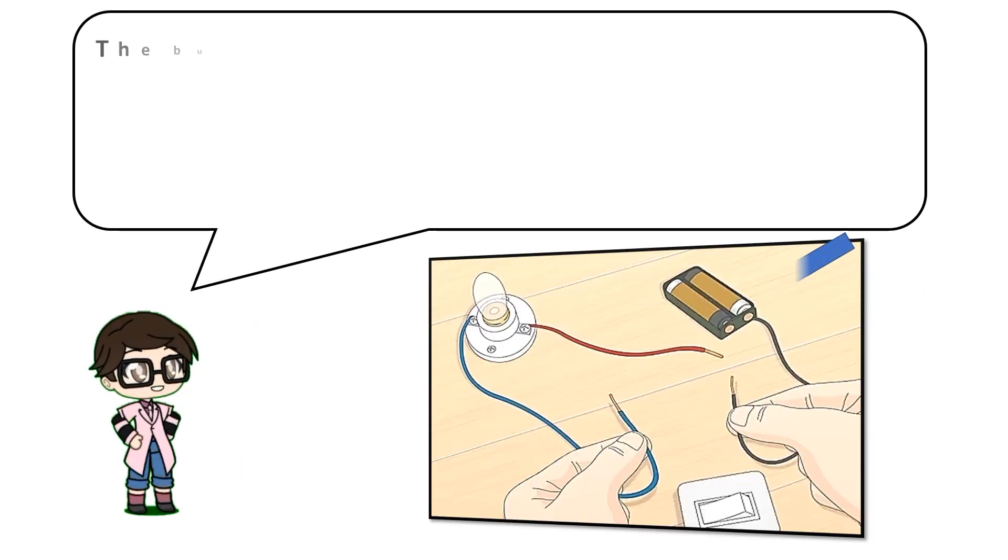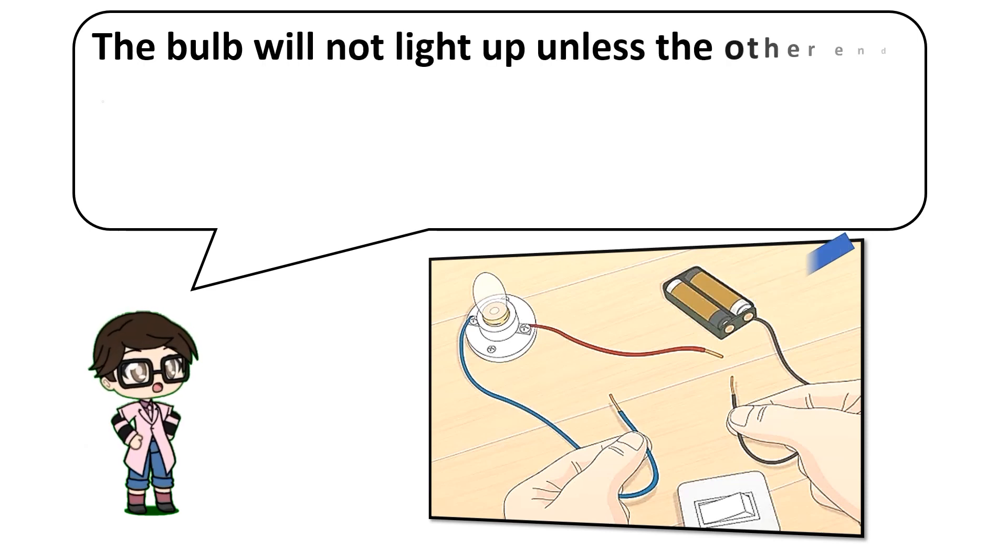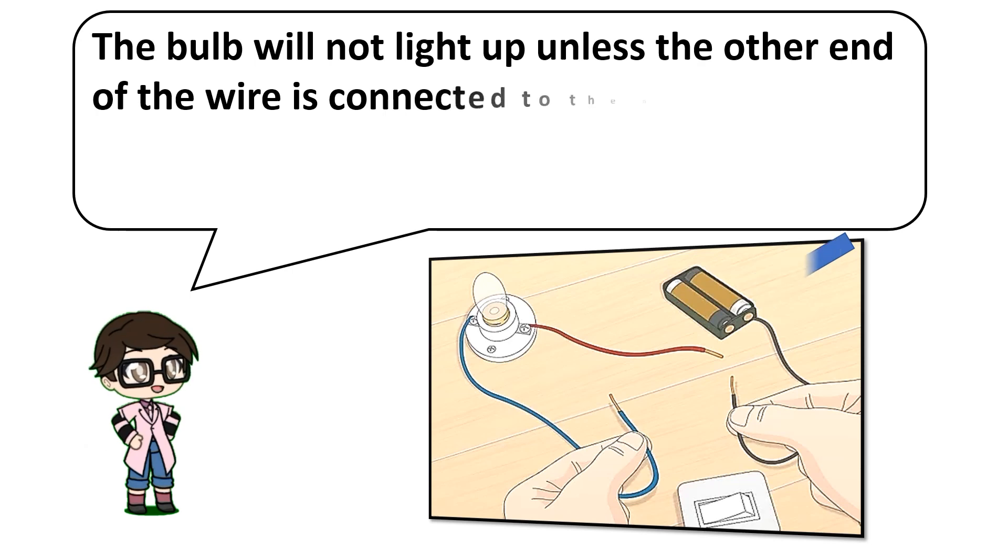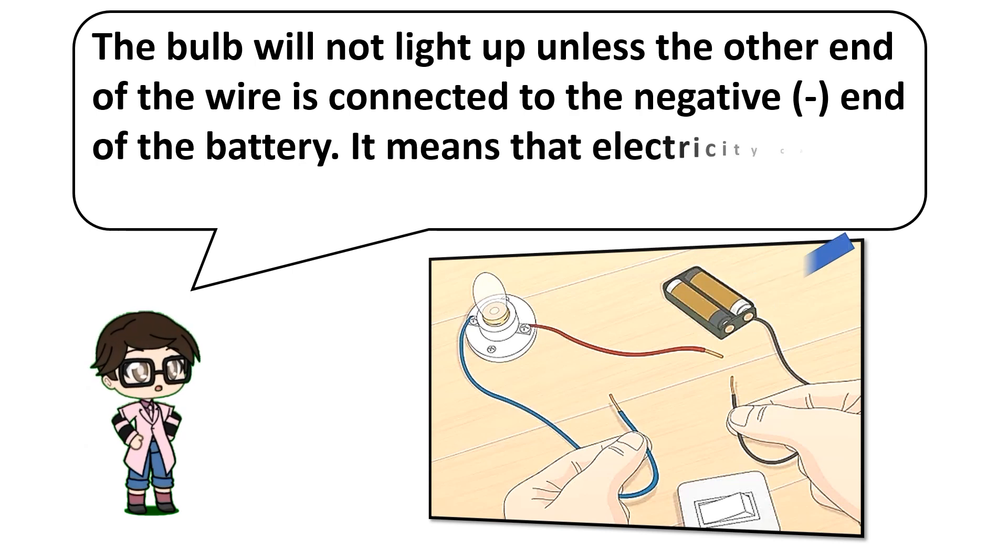The bulb will not light up unless the other end of the wire is connected to the negative end of the battery. It means that electricity cannot flow in an open circuit.